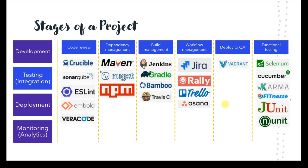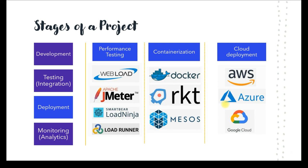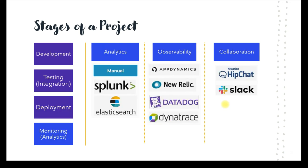Moving to testing: you have code review, dependency management, build management, workflow management, and deployment to QA for functional testing. At each stage you have a combination of tools, procedures, and people. For deployment, you do performance testing using different tools, containerization, and deploy into Azure Kubernetes, AWS Kubernetes, or Google Kubernetes, or into cloud services such as web applications or infrastructure as a service like virtual machines. Once the application is live, you monitor, do analytics, and pipe performance feedback back to development for code optimization. You have analytics, observability, and collaboration.